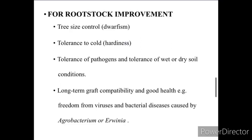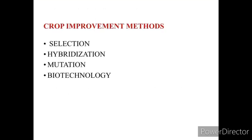For rootstock improvement, the objectives are tree size control, tolerance to cold, tolerance of pathogens, tolerance of wet or dry soil conditions, long-term graft compatibility and good health, e.g., freedom from virus and bacterial diseases caused by Agrobacterium or Erwinia. The crop improvement methods are selection, hybridization, mutation, and biotechnology.